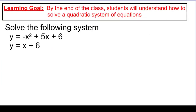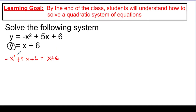Here's the first problem. Solving the system of equations uses the same concept as with two linear equations. The first equation says what y equals, and the second equation shows a y, so I can plug negative x squared plus 5x plus 6 anywhere I see a y in the second equation. So: negative x squared plus 5x plus 6 equals x plus 6. Moving everything to one side to get a positive x squared, I add x squared over, subtract 5x, and 6 minus 6 is 0 — giving me x squared minus 4x equals 0.